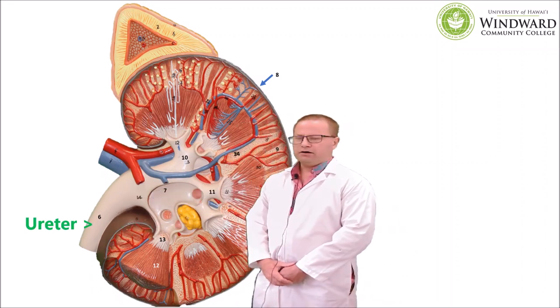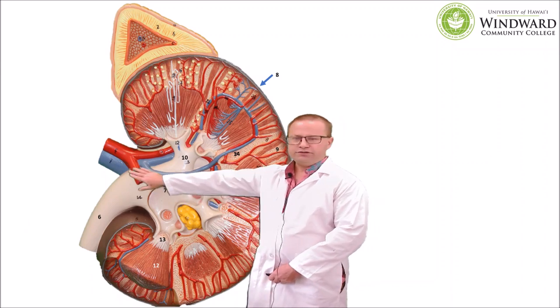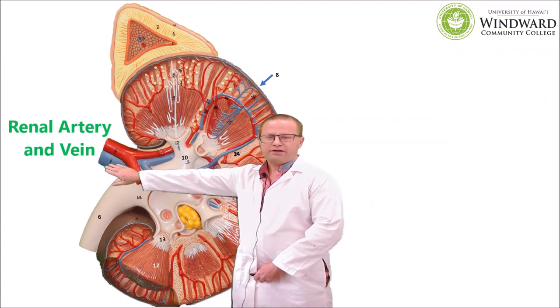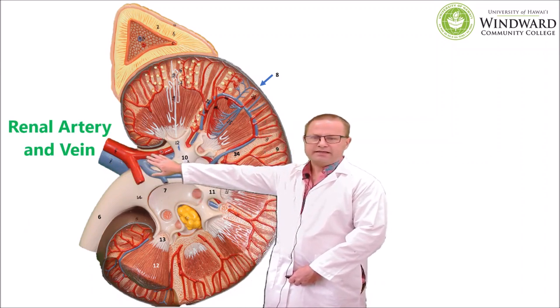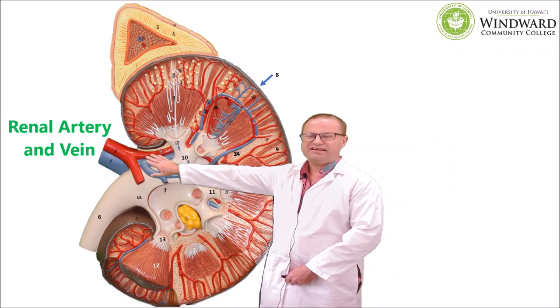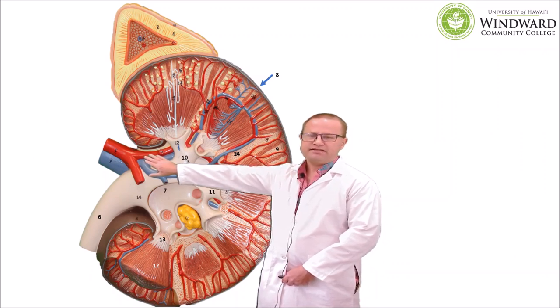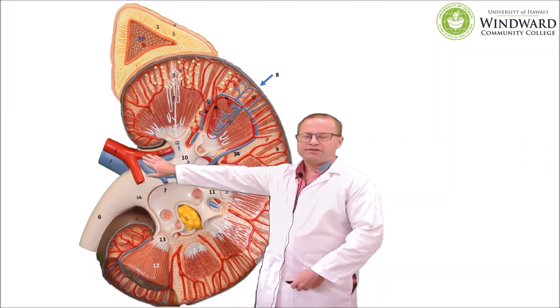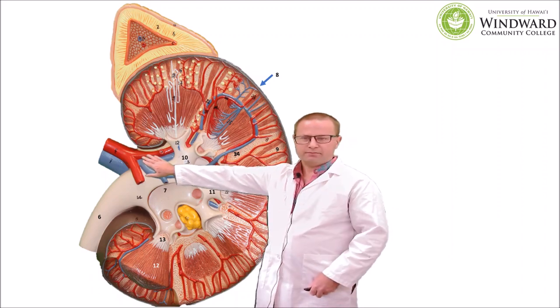Just to point out, we do have a renal artery and renal vein coming into the kidney. Remember, the kidney is a very vascular organ that at times is accepting more than 25% of the cardiac output of the body.